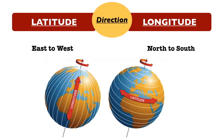The second difference is direction. The direction of latitudes is from east to west, and the direction of longitude is north to south, that intersects both the poles.